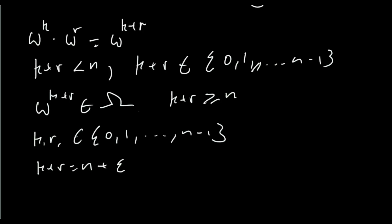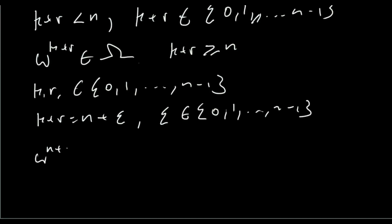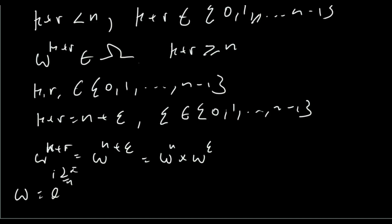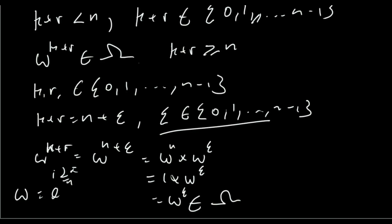So if k plus r is greater than or equal to n, we can write k plus r equals n plus some small amount epsilon, where epsilon is in the range 0 up to n minus 1. If this is true, then omega to the k plus r equals omega to the n plus epsilon, which we can write as omega to the n times omega to the epsilon. We know by definition that omega to the n equals 1, since omega equals e to the i 2π over n, so omega to the n is e to the i 2π which is 1. Therefore this is just 1 times omega to the epsilon, which equals omega to the epsilon. Since epsilon is in the right range, omega to the epsilon is definitely a member of the set. So we've proved that for any k and r, omega to the k times omega to the r is always a member of the set — closure is satisfied.